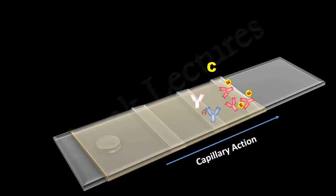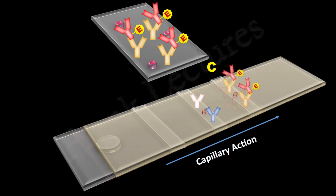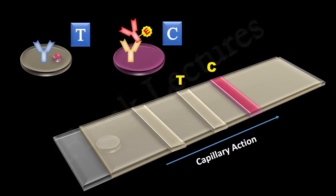The reaction zone antibodies then reach the control zone. Recall that control zone antibodies recognize and bind the reaction zone antibodies, so they bind and fix them. In the test zone, there are no enzyme-conjugated antibodies; therefore, there are no enzymes to act on the inactive dye molecules, and no color development takes place. But in the control zone, enzyme-conjugated antibodies are present, so the enzyme acts on the inactive dye molecule and a colored line results. Thus, a single colored line in the control zone indicates that the test is negative.